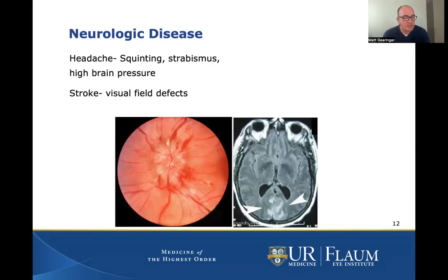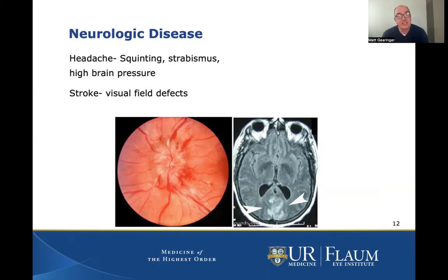The last things we can pick up with children's eye exams are neurological diseases. We get referred a lot of patients for headaches to see if this is an eye problem. Most often it's not, but children can have headaches from squinting all day if they're not seeing well. Some forms of strabismus require the child to work hard to keep the eye straight, which can cause eye strain or headache. Diseases that cause high brain pressure can cause headaches, and as eye doctors we look for the optic nerves to swell, like the bottom left picture — this can be a sign for other doctors that brain pressure is high.